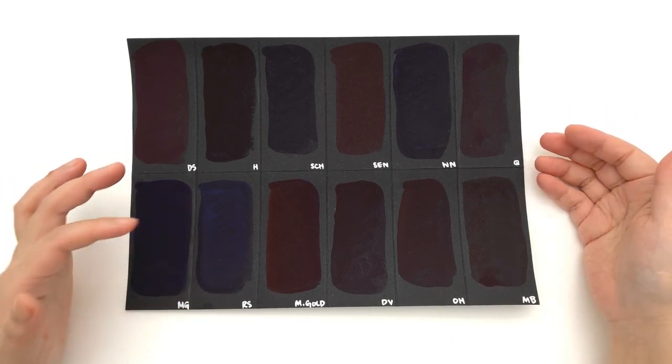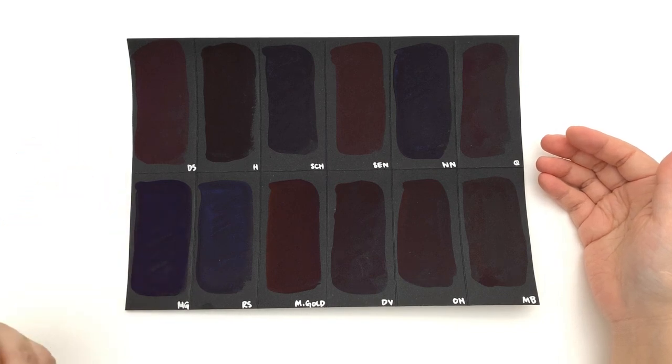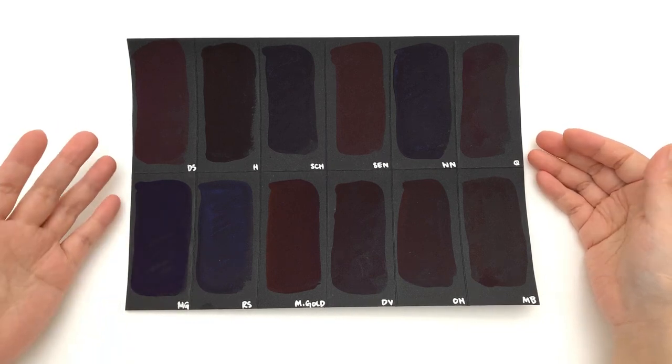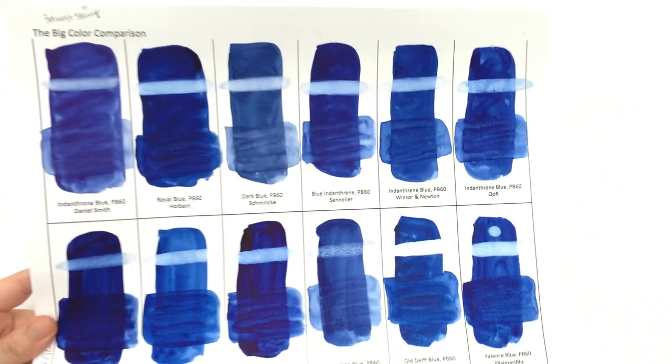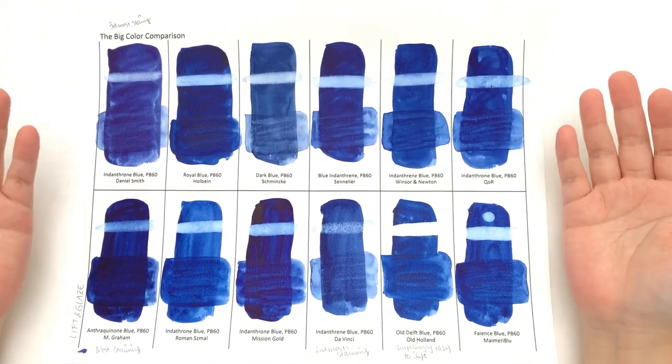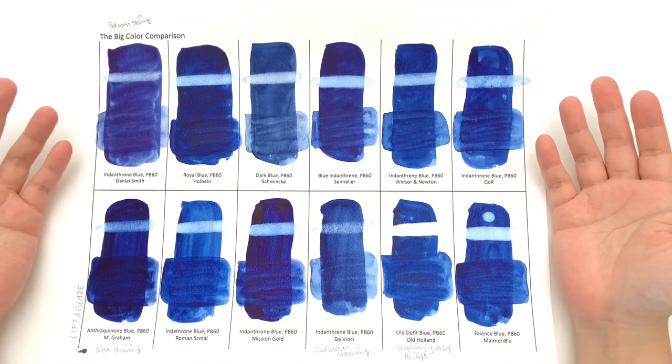In terms of opacity, it's as expected except for Roman Szmal. I think it's probably a little bit more on the opaque side. It's still going to be pretty transparent though - it's not going to be like a really opaque paint.